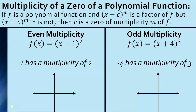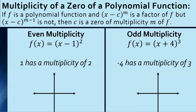In this video we're going to be looking at what's called the multiplicity of a zero of a polynomial function. This first box is way more complicated than what it needs to be, so I'm just going to summarize what's in the box — it's much easier to understand when we look at an actual example. So don't panic yet.